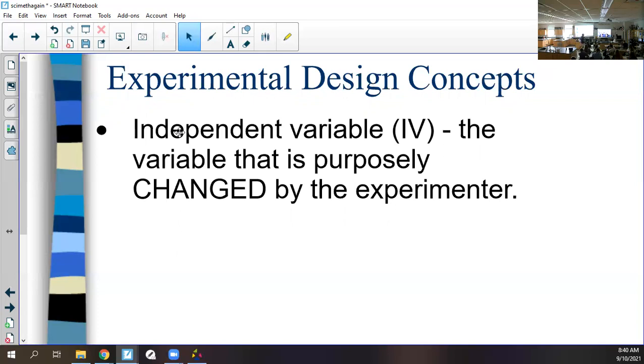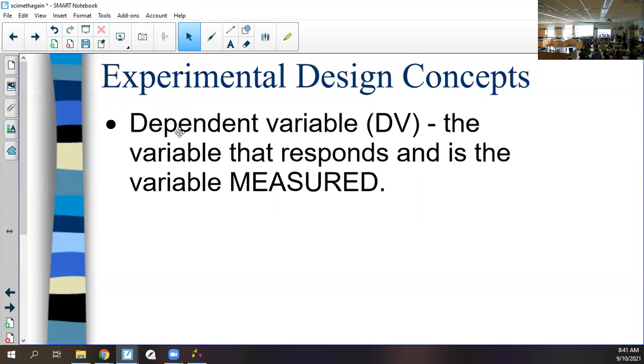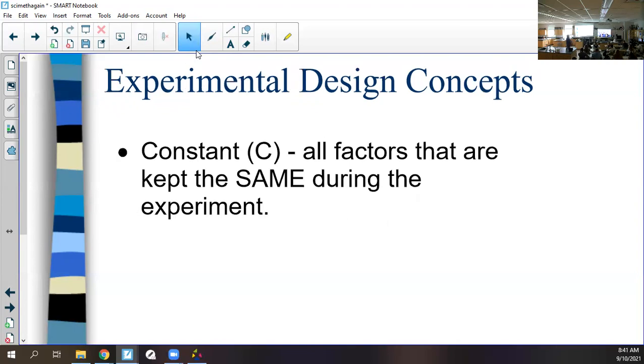These are really important—they're going to be matching terms we use all year. The independent variable (IV) is the variable purposely changed by the experimenter. The dependent variable (DV) is the variable that responds and is the variable measured. In my experiment, the IV would have been the liquid—one was Mountain Dew, one was water. The dependent variable would have been how tall the plant grew or how many leaves it had—the thing you measure at the end to see if anything happened.